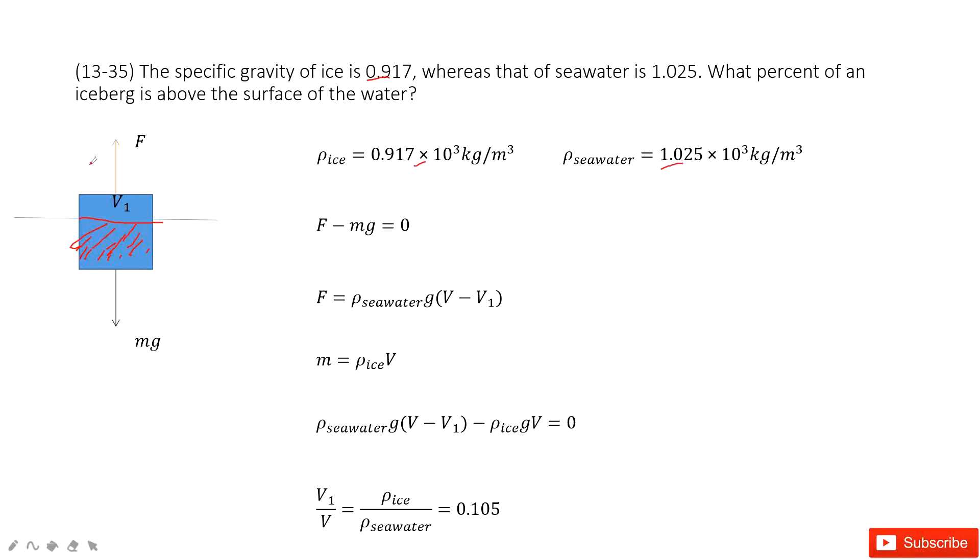The mass of this ice is just the density of the ice times v. Now we input the mass and F inside, we get a function like that.